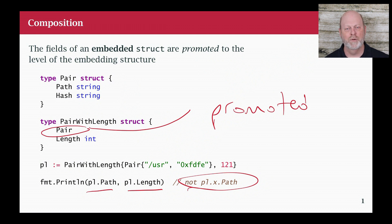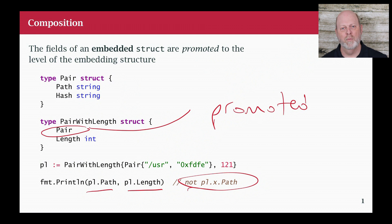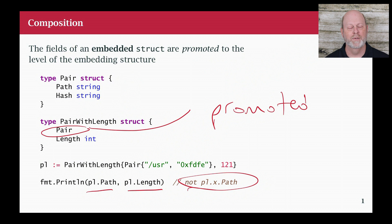That's the notion of composition. We could do composition by having pairWithLength have two fields and give each field a name — and that works — but then we'd have to use all that dot notation. There's an advantage to promotion because not only do we promote fields, we promote methods too.